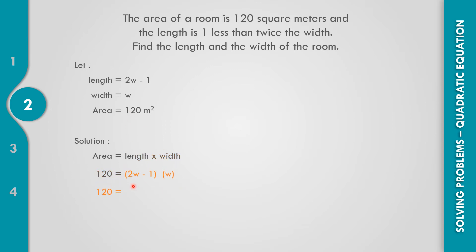Let us multiply: 2W times W equals 2W squared, and negative 1 times W equals negative W. Rewriting in standard form, that becomes 2W squared minus W minus 120 equals 0.